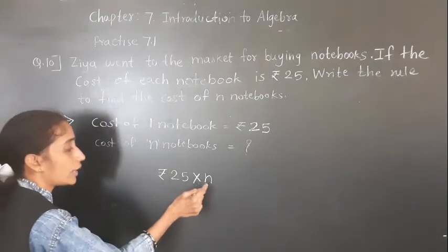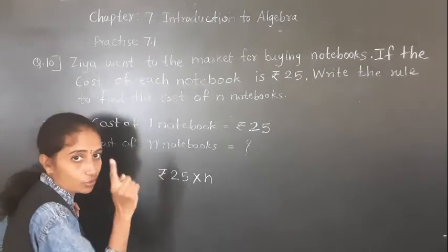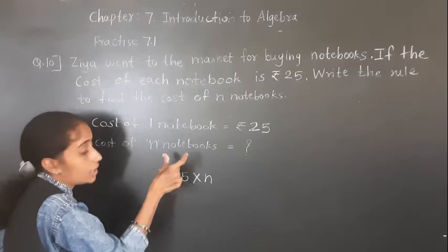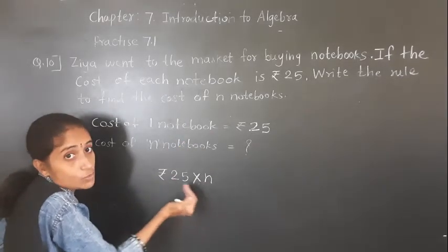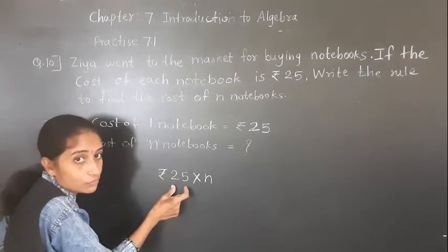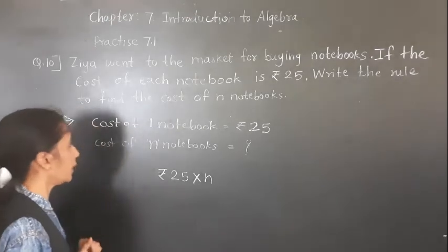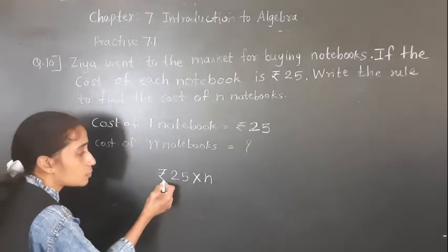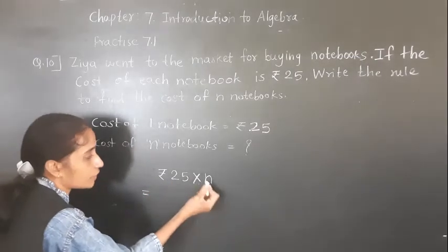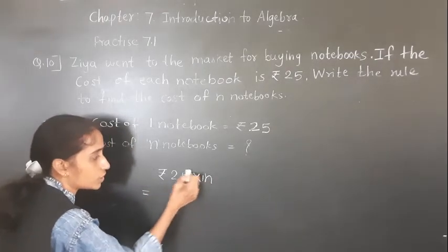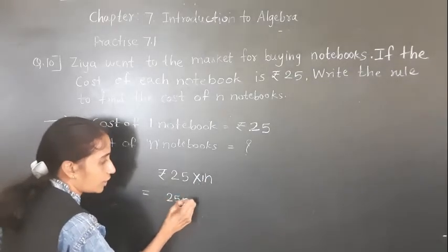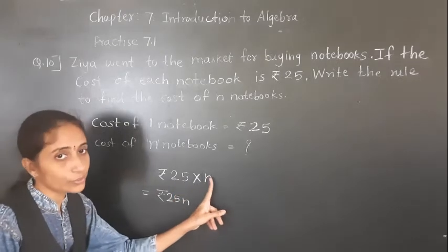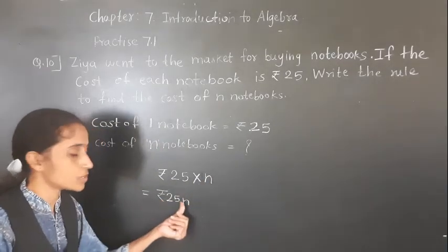So we multiply rupees 25 by N. The rule is rupees 25 into N. Since there is no number written before N it means 1, so 25 ones are 25. Therefore the rule is rupees 25N.